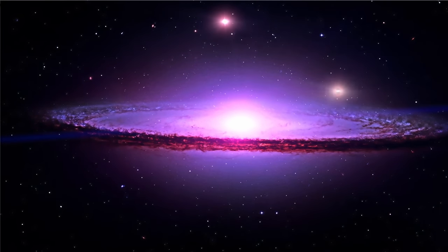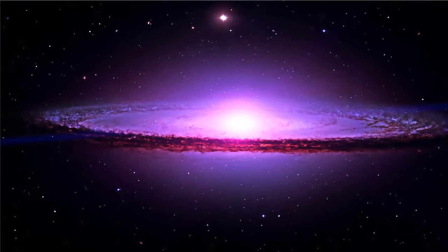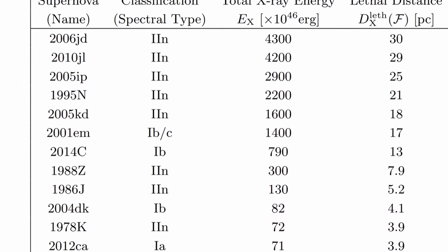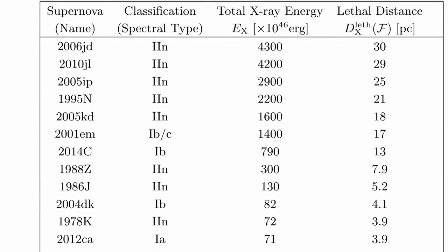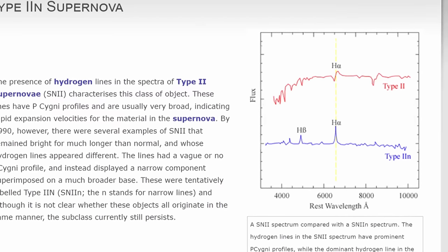Which basically means that supernovae in general seem to be very different depending on the environment around the star that explodes. And specifically if there is a lot of gas and it's very dense, it seems to actually create a lot more dangerous radiation. Which of course implies that centers of galaxies are probably not going to be very friendly for complex life. But the other thing you might notice from this table is that the majority of very powerful supernovae are all type 2, or to be more specific, type 2N.